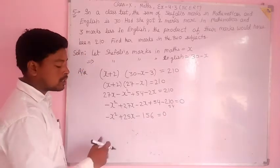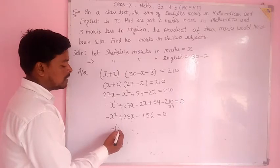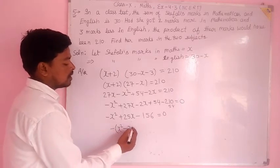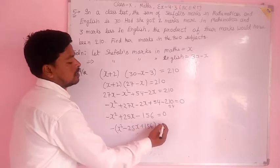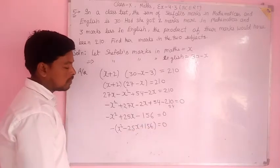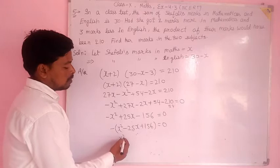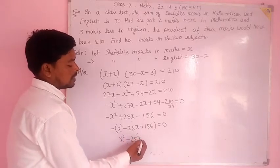Minus X squared plus 25X. We'll subtract with opposite signs. 54 minus 210 gives minus 156. So we have minus X squared plus 25X minus 156 equal to 0.